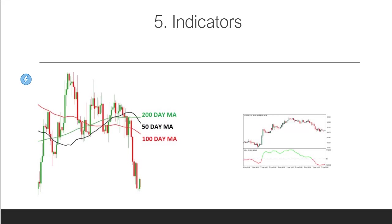An indicator is something that fits your trading strategy and can be used as an additional tool to make certain decisions. Don't ever spend money on the magical indicator, because that is not how indicators work. Let me switch to the charts here and show you some ways you can use a moving average or some kind of indicator.